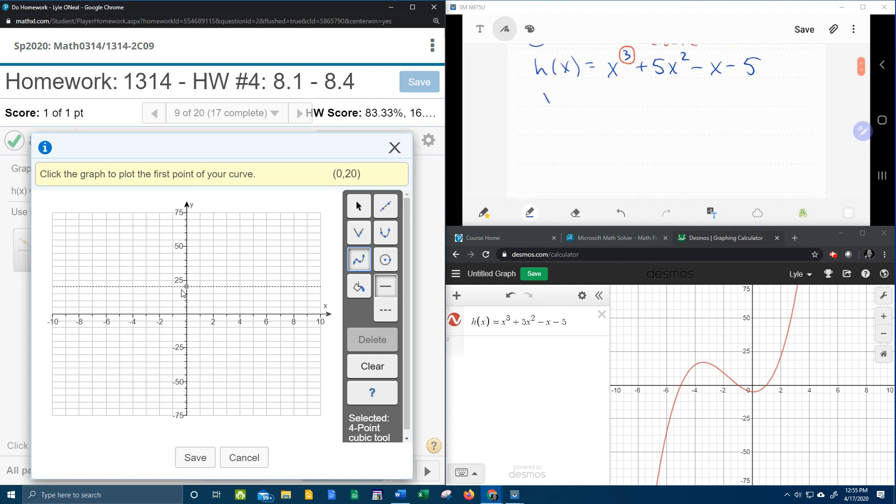And so what we're going to do is we're going to make a table of values where we're going to need to pick four x's to come up with four points. I'm going to start with zero because zero is super easy to work with. If I plug in a zero for every x, that'll make negative five. I need another x. How about one?